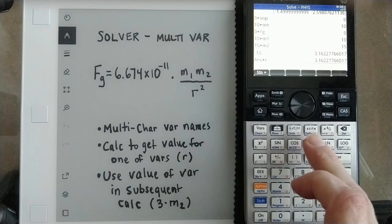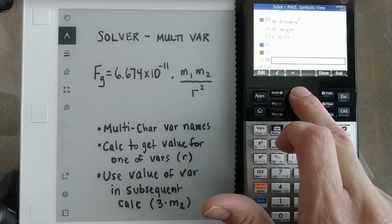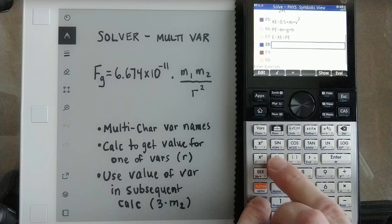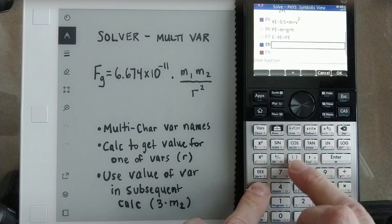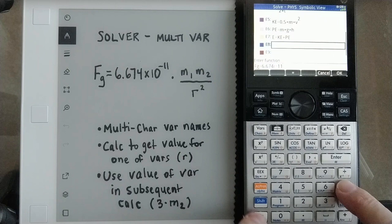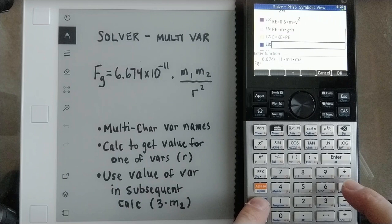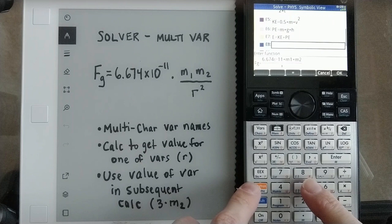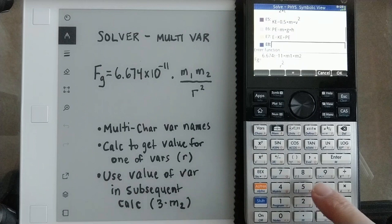Now when we go into our solver, oops, let me go into the solver here. We can define our equation. We still have to type it in, but the f, oops, I did that wrong. Sorry. Alpha fg equal 6.674 e to the negative 11 times m1 times m2 divided by, doesn't hurt that it's doing it that way, r. I'm going to square that. Hit OK.